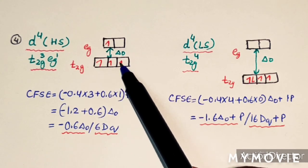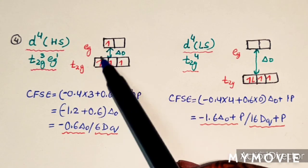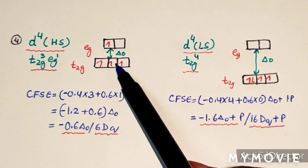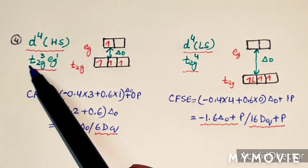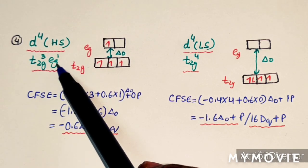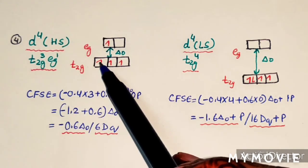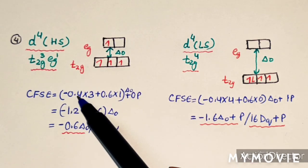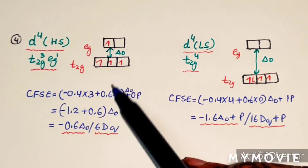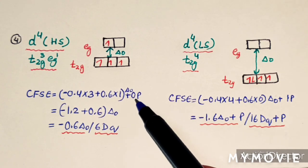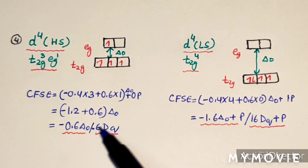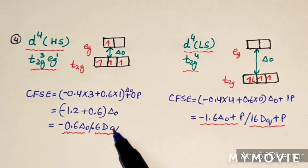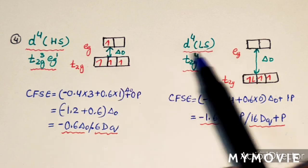For D4 high spin complex (weak field, small delta O), electrons fill as 1, 2, 3, 4 — three electrons in T2G and one in EG, giving configuration T2G3EG1. CFSE = 3×(−0.4) + 1×(0.6) = −0.6 delta O or −6 DQ, with 0 paired electrons so no pairing energy contribution.